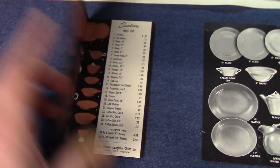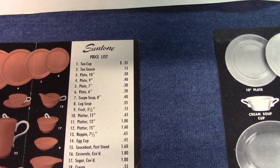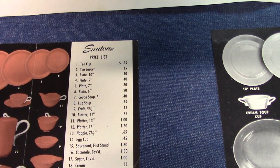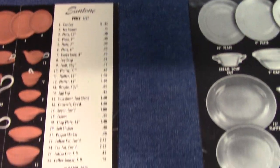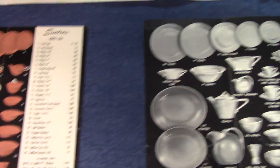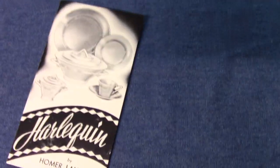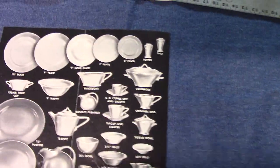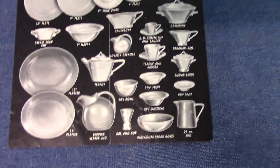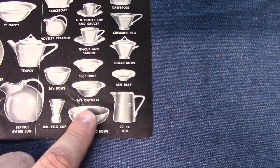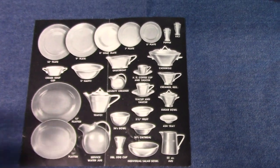But if we look at this Sun Tone brochure, which is a little later — early 1950s — we've got a 10 inch plate, 9 inch plate, 7 inch plate, 6 inch plate, and 15 inch platter, 13 inch platter, 11 inch platter. Everything is closer to the actual size. We start to see trade sizes disappear from the 1930s to the 1950s. The Harlequin brochure from the 1950s has everything in regular sizes — 10 inch plate, 9 inch plate, 8 inch soup plate — but we still have a 36s bowl and 36s oatmeal, with trade size designations extending into the 1950s even though none of the other pieces use them.